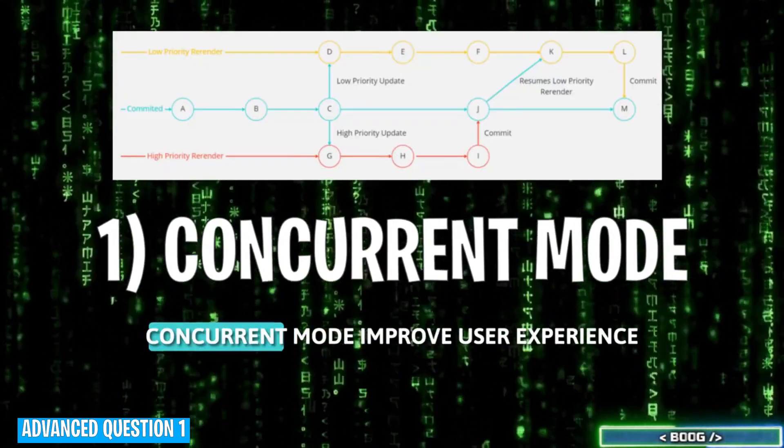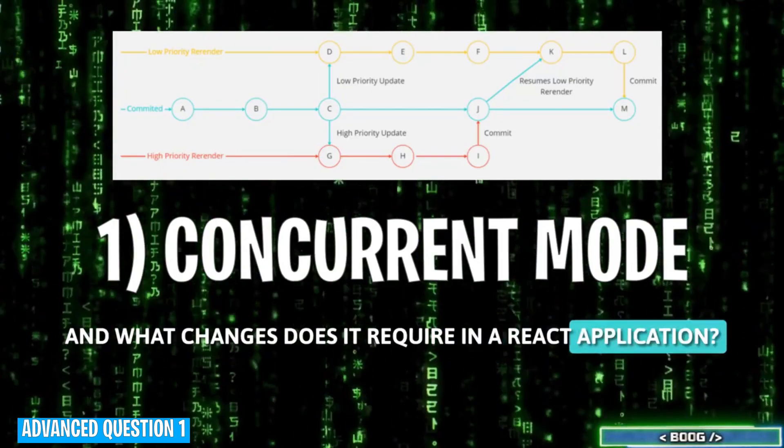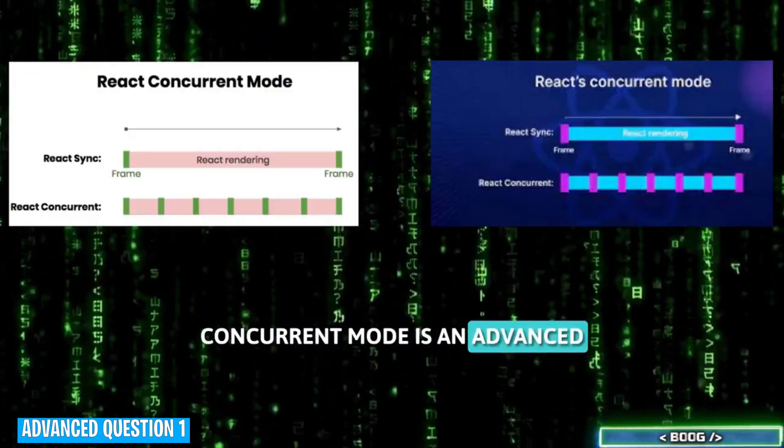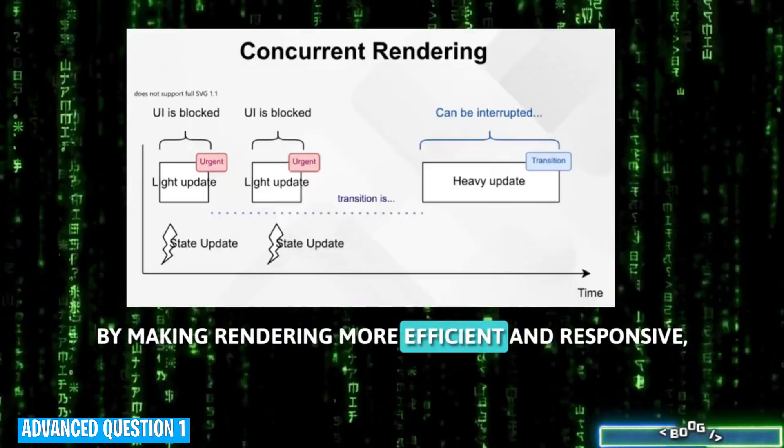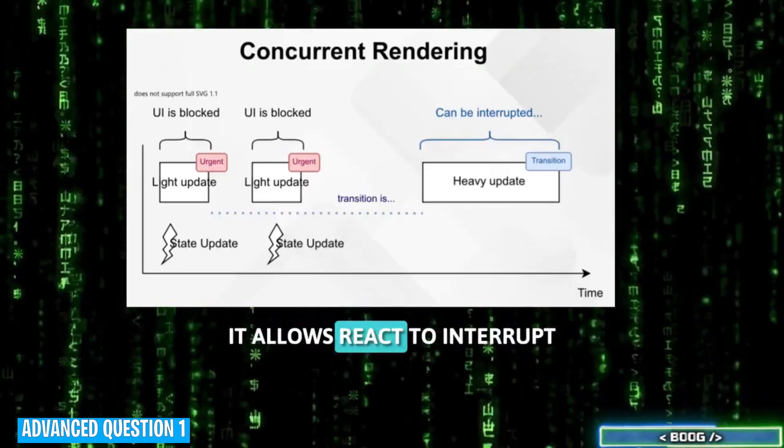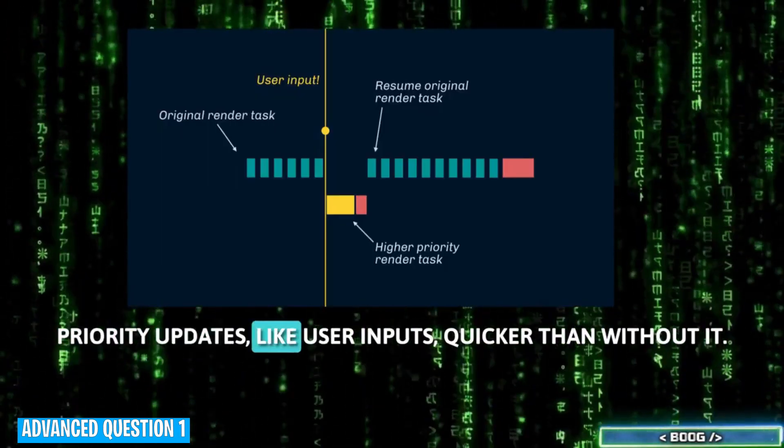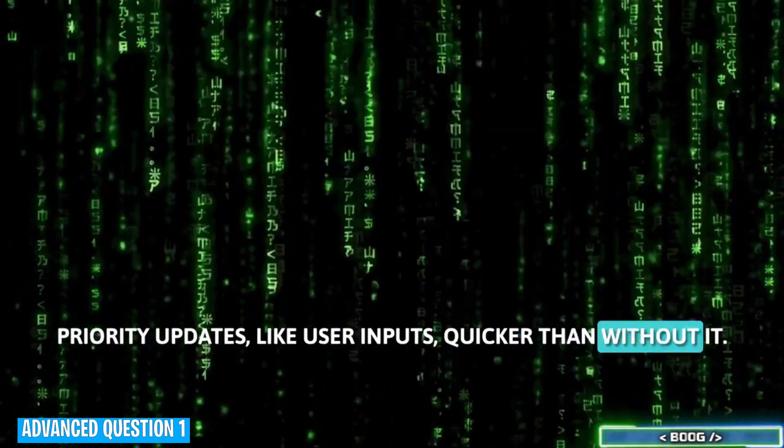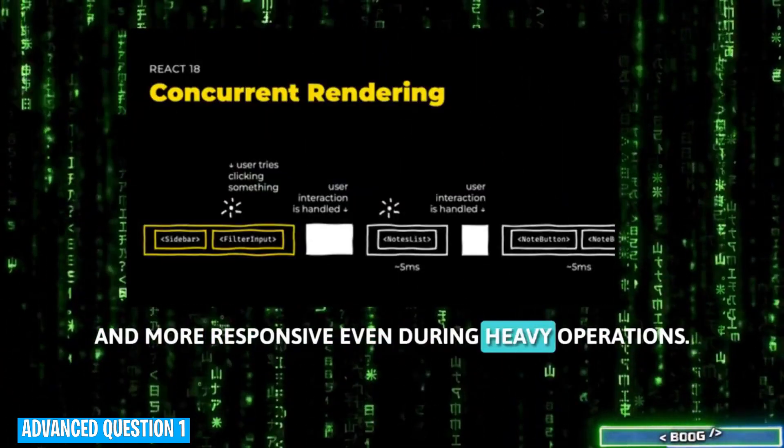Question 1. How does React's concurrent mode improve user experience, and what changes does it require in a React application? Concurrent mode is an advanced React feature that enhances the user experience by making rendering more efficient and responsive. It allows React to interrupt a long-running render to handle high-priority updates, like user inputs, quicker. This means that apps can feel faster and more responsive, even during heavy operations.